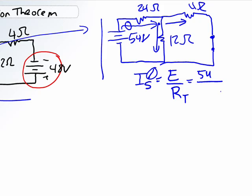It's just the source current seen by this network over here. So in this network, it's 54 volts divided by the total resistance. Well, what is the total resistance? Well, it's the 4 in parallel with the 12 plus the 24. So what's 4 in parallel with 12? 12 times 4 divided by 12 plus 4 gives us a 3-ohm resistance. So 24 plus 3 is equal to 27.